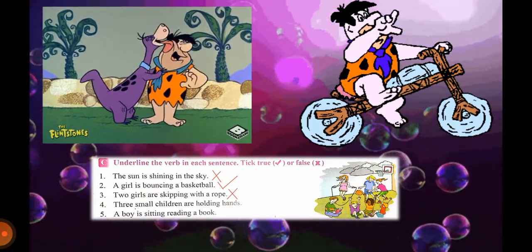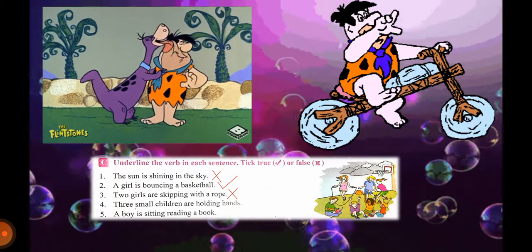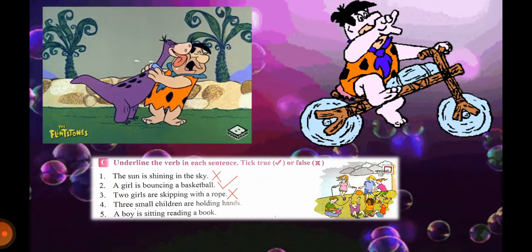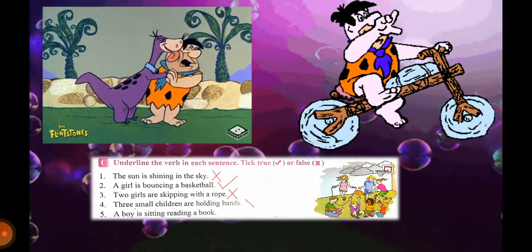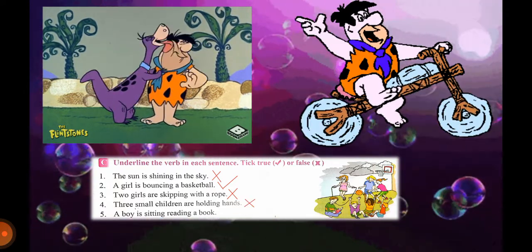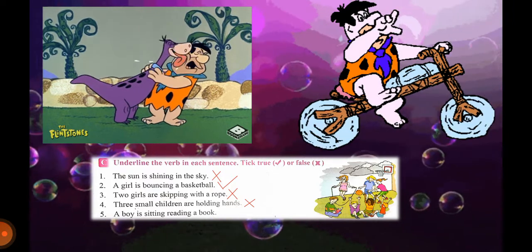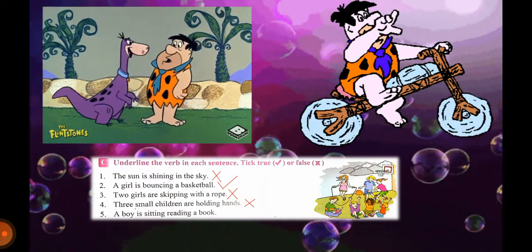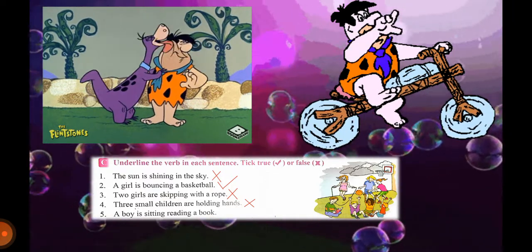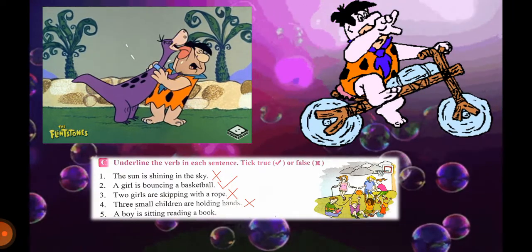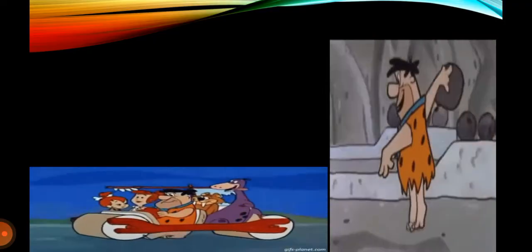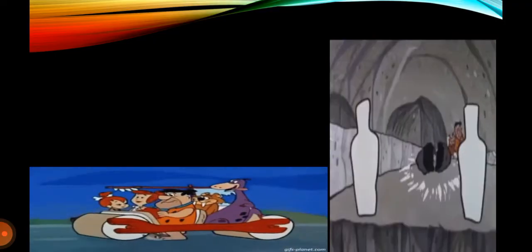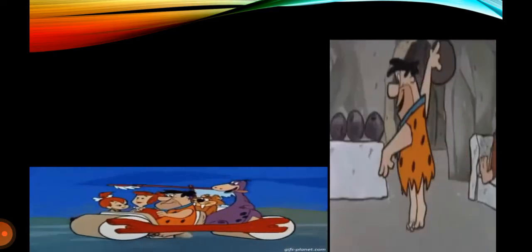Two girls are skipping with a rope — cross. Three small children are holding hands — cross. A boy is sitting reading a book — tick. Now we will move to our next exercise.